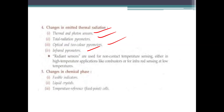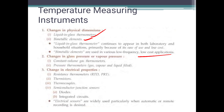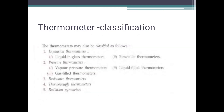The temperature classification is important. Thermometers can be classified as follows: expansion thermometers (liquid-in-glass and bimetallic), pressure thermometers (vapor pressure, liquid-filled, gas-filled), resistance thermometers, thermocouple thermometers, and radiation pyrometers. This is the full classification of thermometers.